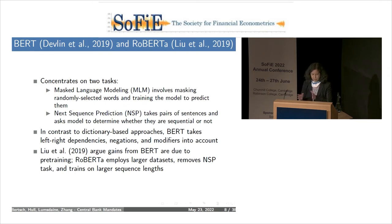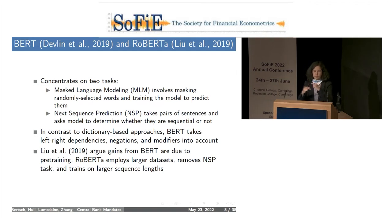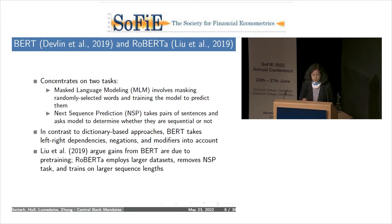The BERT model concentrates on two tasks: masked language modeling and next sentence prediction, both of which automatically generate labels. Masked language modeling involves randomly masking selected words in a sequence and training the model to predict them—take a paragraph, randomly remove certain words, and ask the algorithm to predict the missing word. Next sentence prediction takes pairs of sentences and asks the model to determine whether they're sequential or not. In contrast to dictionary-based approaches like LDA, BERT takes left-right dependencies into account, handles negations, and handles subtle modifiers.